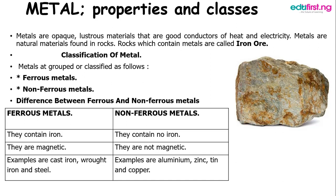Metals are classified into two: you have the ferrous metal and you have the non-ferrous metal. Iron is called ferrum — that's the Latin name — hence the word ferrous. So ferrous metals are metals that contain iron, while non-ferrous metals are those that do not contain iron. Ferrous metals are attracted to magnets because of the presence of iron, while non-ferrous metals are not attracted to magnets. Examples of ferrous metals are cast iron, wrought iron, and steel. Examples of non-ferrous metals are aluminum, zinc, and copper.